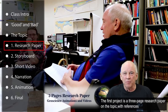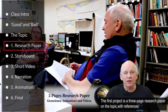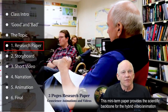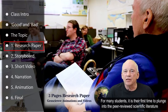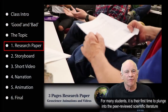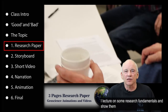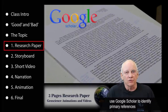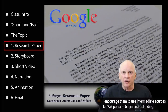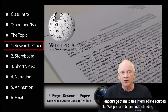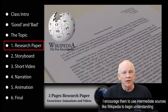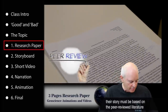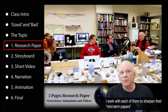The first project is a three-page research paper on the topic, with references. This mini-term paper provides the scientific backbone for the hybrid video animation. For many students, it is their first time to plunge into the peer-reviewed scientific literature. I lecture on some scientific research fundamentals and show them how to use Google Scholar to identify primary references. I encourage them to use intermediate sources like Wikipedia to begin understanding the topic, but emphasize that for scientific validity, their story must be based on the peer-reviewed literature. I work with each of them to sharpen their mini-term papers.